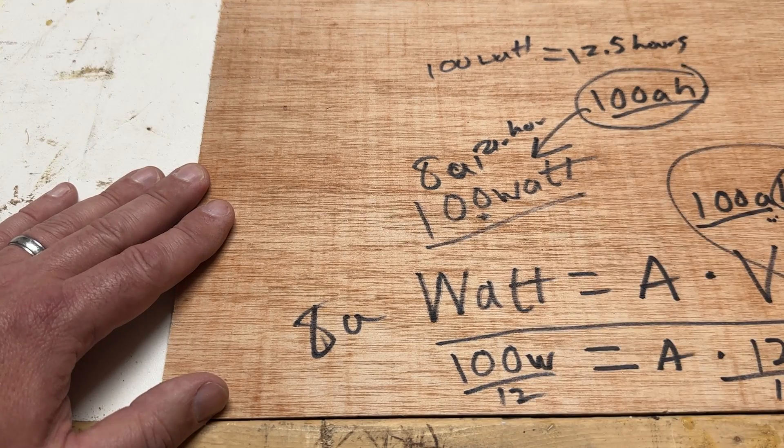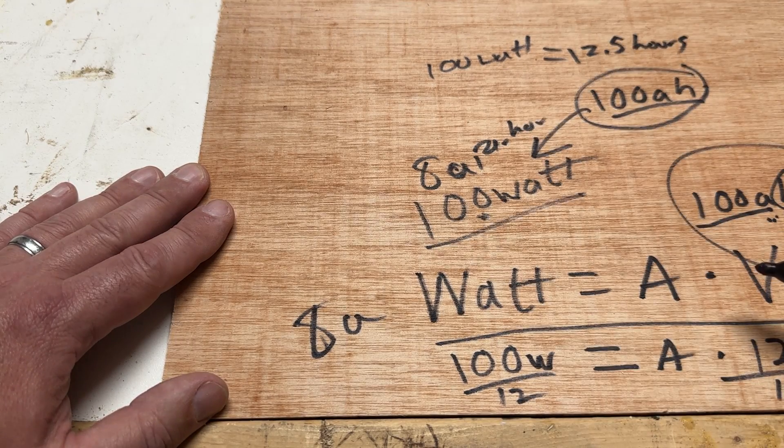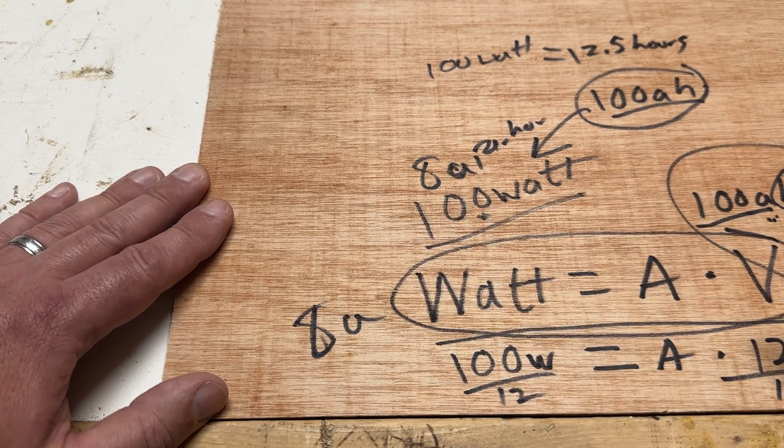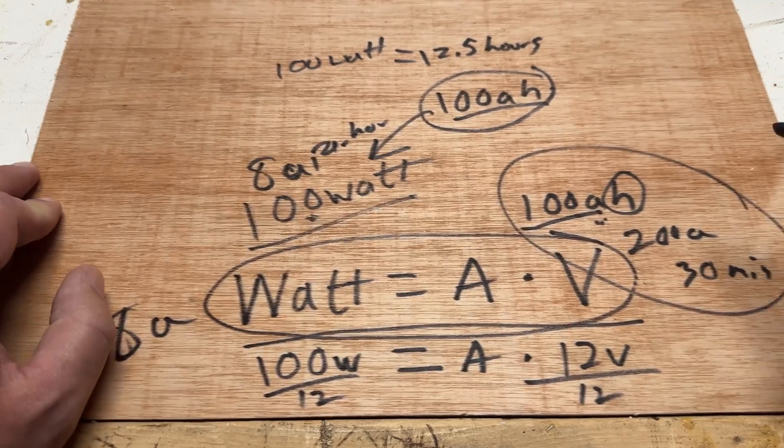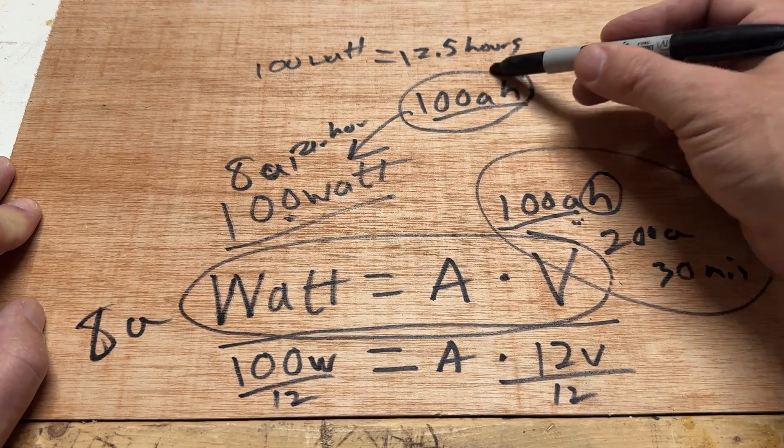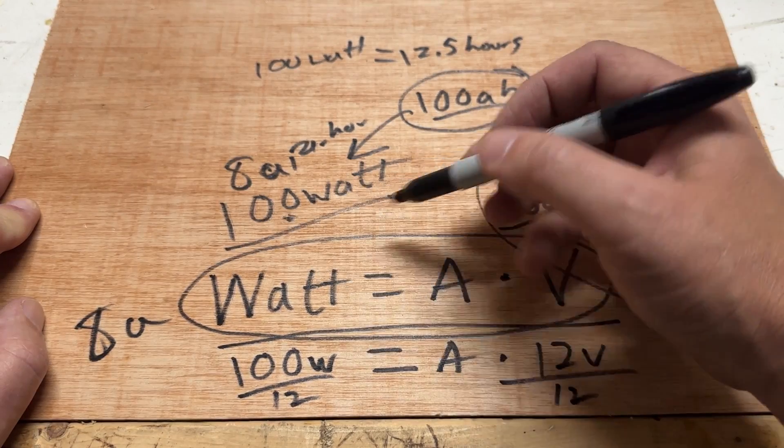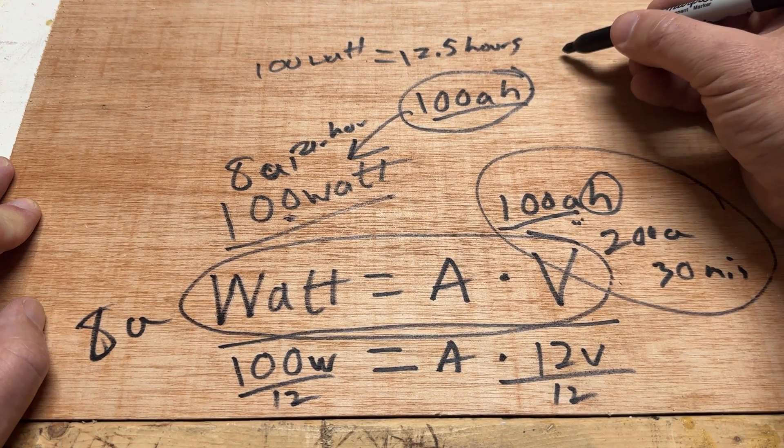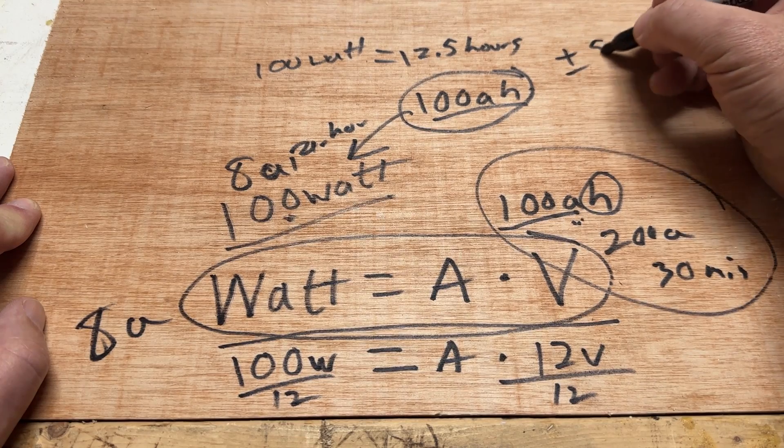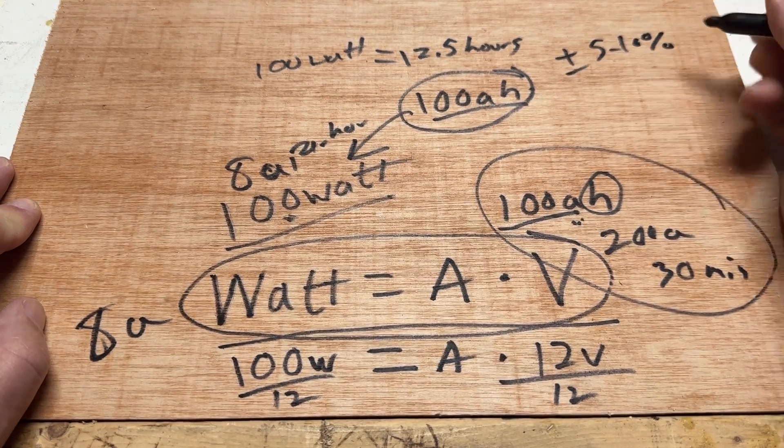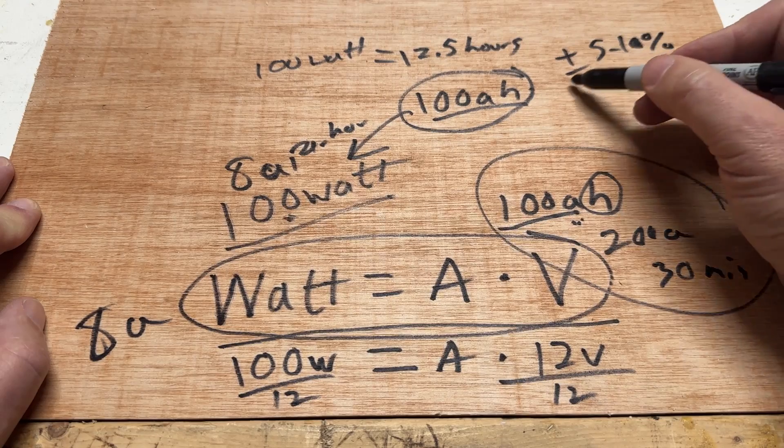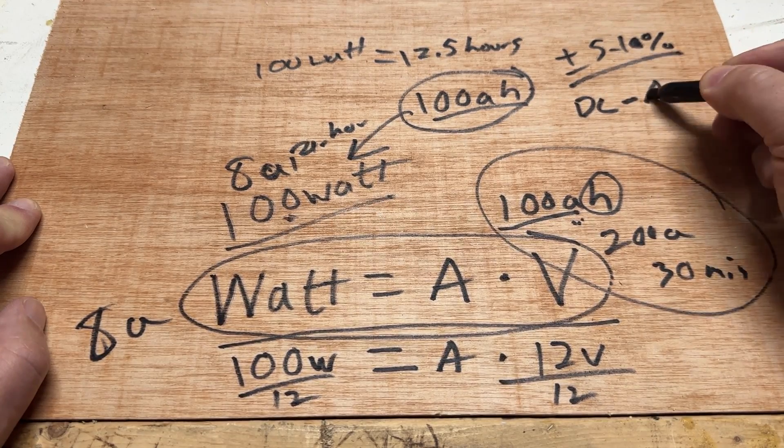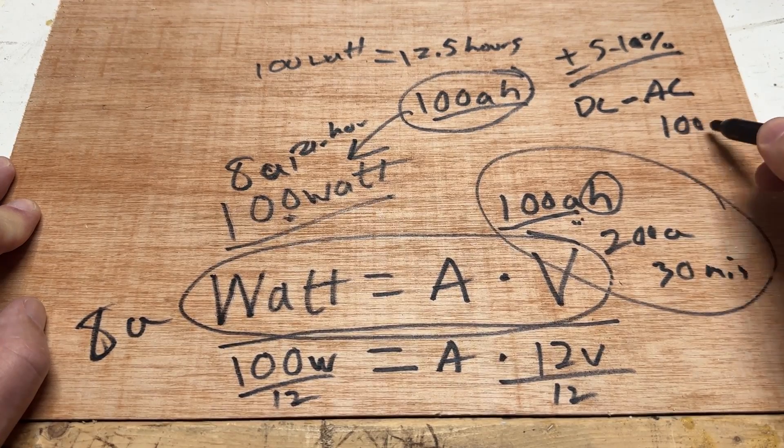These are all very rough estimates, okay? But this is how we figure that out. This is the only formula that you need in order to solve all those equations and problems, and then a few basic bits of math. Now there are a few things you want to consider here. If you're running things through an inverter connected to your battery, then there's going to be a loss there. You're going to lose, let's say plus or minus 5% to 10% of your overall capacity. There's some efficiency loss there when you're running things through an inverter.